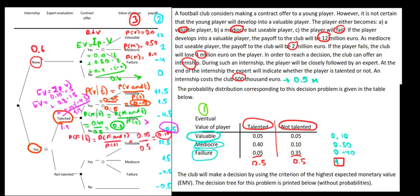Let's work out the intuition quickly. It makes sense: if the internship proves that he's talented, then we have a high probability of gaining value from him, so it makes sense to invest further and have this positive expected value rather than not giving him the shot to be a successful player. Intuitively, the expected value of a talented player is maximized when we offer him a contract. In the next video, we'll work out the other case when the player is not talented using the same method.